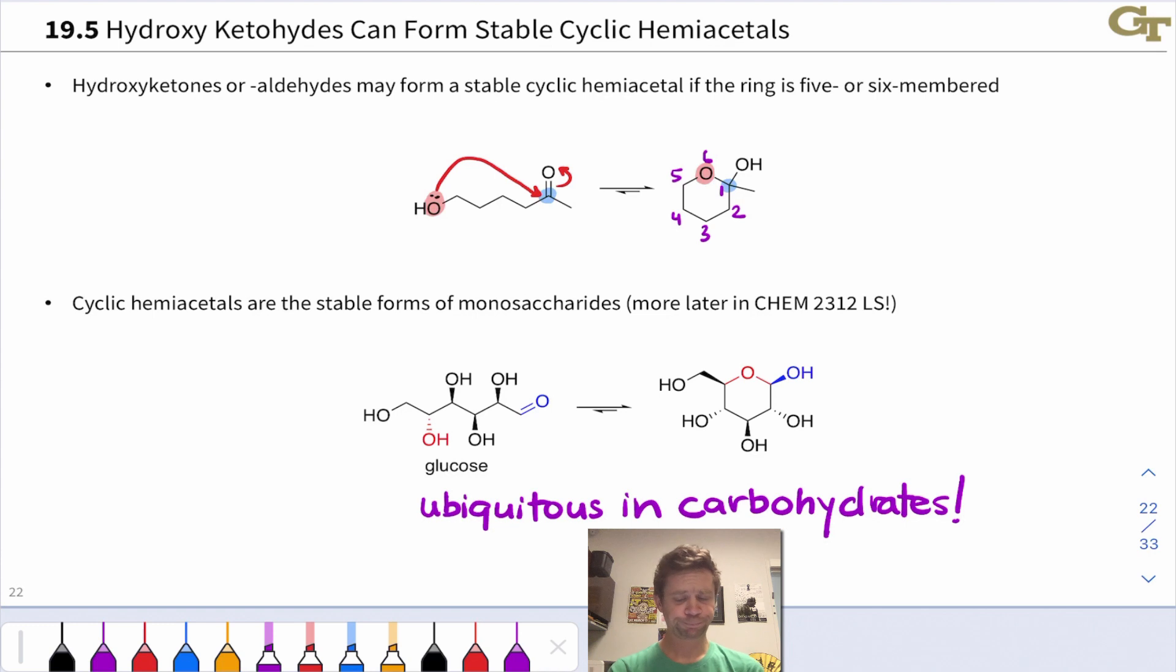In monosaccharides, the cyclic form is heavily favored because there are many hydroxyl groups and the aldehyde functional group is particularly susceptible to nucleophilic attack. These cyclic hemiacetals are everywhere in the carbohydrates, which essentially by definition contain a carbonyl group and a hydroxyl group well-positioned for cyclization like this.